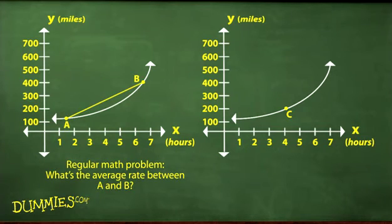Here's a regular algebra problem. If you know where A and B are, you can determine the slope between A and B. In this problem, that slope gives you the average rate in miles per hour for the interval from A to B.